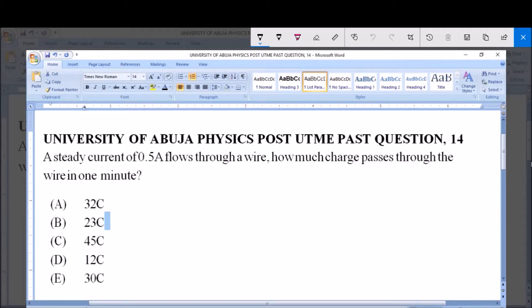Welcome to the webinar with University of Abuja Physics post UTME past question, question 14. A steady current of 0.5 amperes flows through a wire. How much charge passes through the wire in one minute? A: 32 coulombs, B: 23 coulombs, C: 45 coulombs, D: 12 coulombs, and E: 30 coulombs.